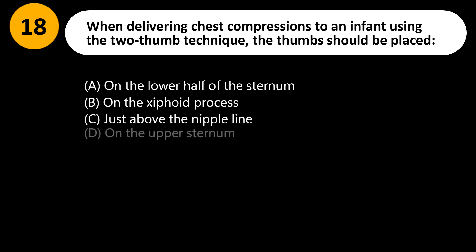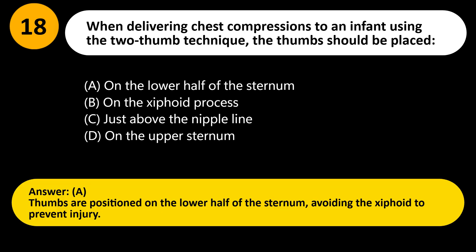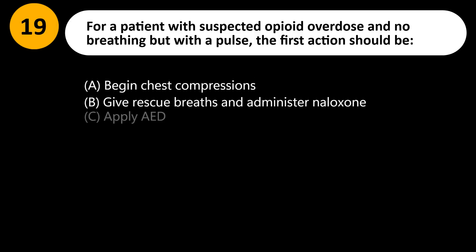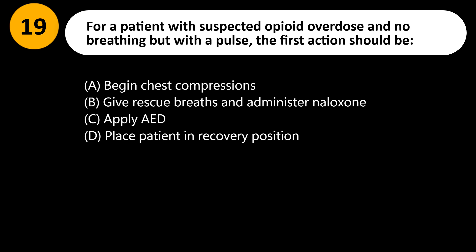When delivering chest compressions to an infant using the two-thumb technique, the thumbs should be placed: A) On the lower half of the sternum, B) On the xiphoid process, C) Just above the nipple line, D) On the upper sternum. Answer: A. Thumbs are positioned on the lower half of the sternum, avoiding the xiphoid to prevent injury.